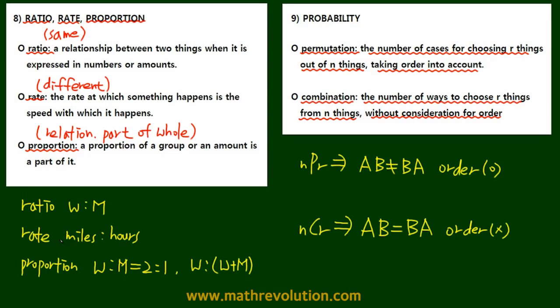So we went over some ratio, rates, and proportion, as well as probability. And to add, in rate we could have something like speed rate or the work rate. These are the most commonly found rates on GMAT exam, so make sure you know these vocabularies before your GMAT math test.